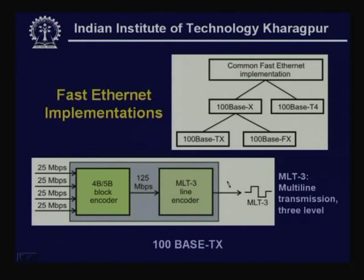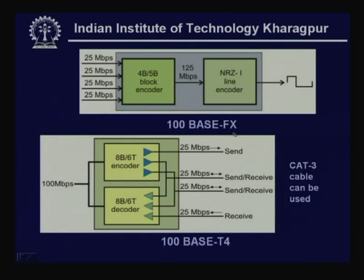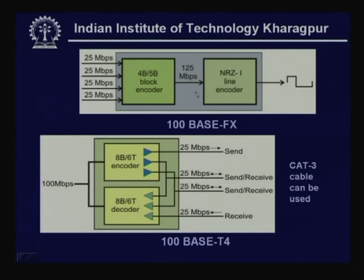For 100BASE-FX using optical fiber, NRZ-I (Non-Return to Zero Inversion) line encoding is used along with the same 4B/5B block encoding, giving a baud rate of 125 Mbps. Manchester encoding is not used because it would require a baud rate of 200 Mbps, making implementation very costly. Using 4B/5B encoding reduces cost, requires less bandwidth, and still achieves clock synchronization through sufficient signal transitions.